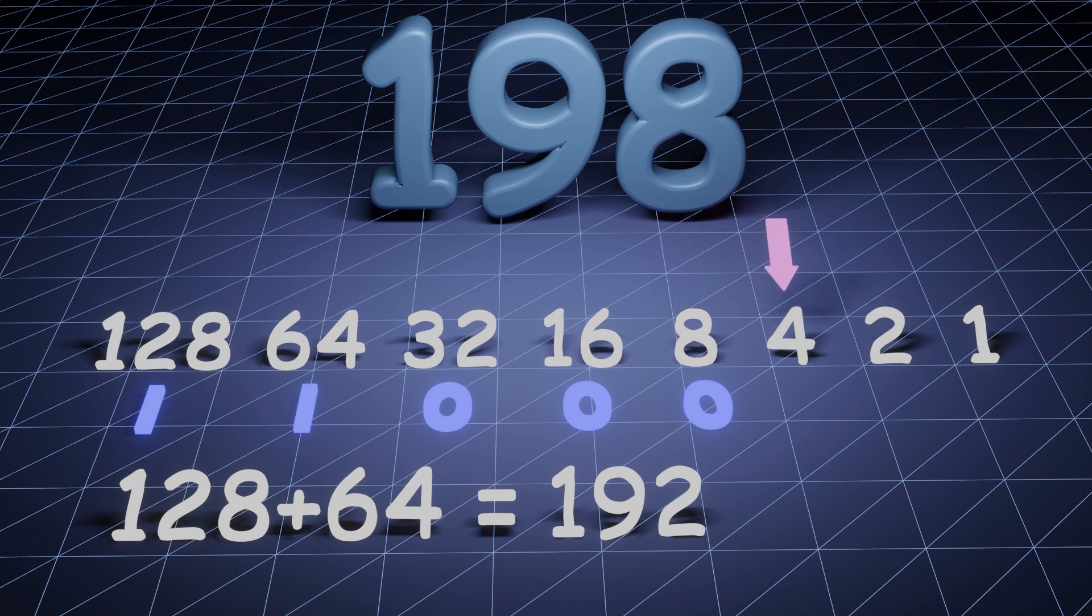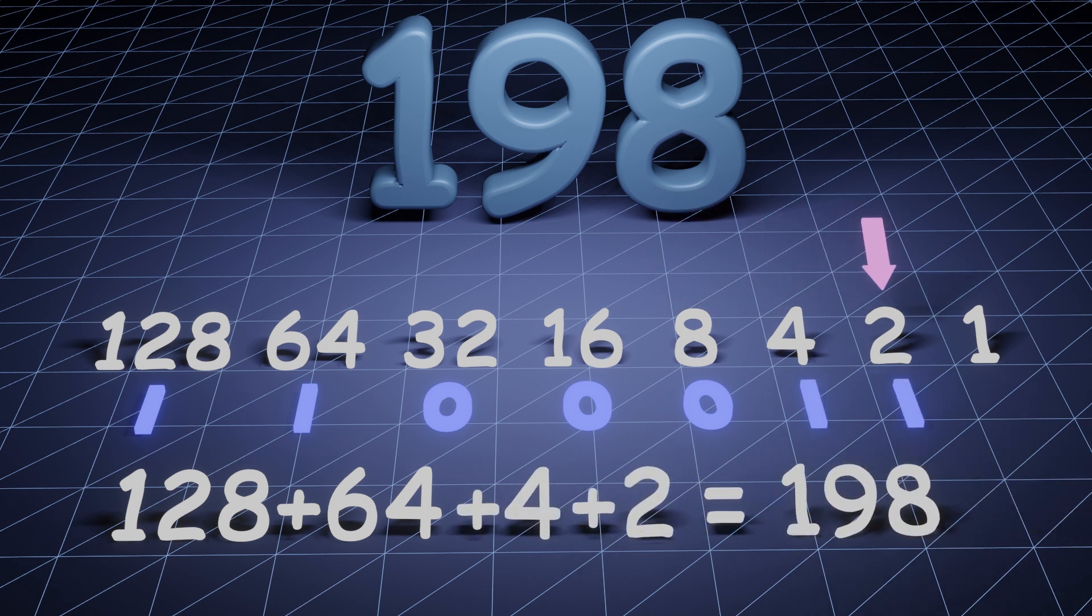You should be able to see now that 4 and 2 can be used to complete our sum, and binary 1s can be added below these numbers.